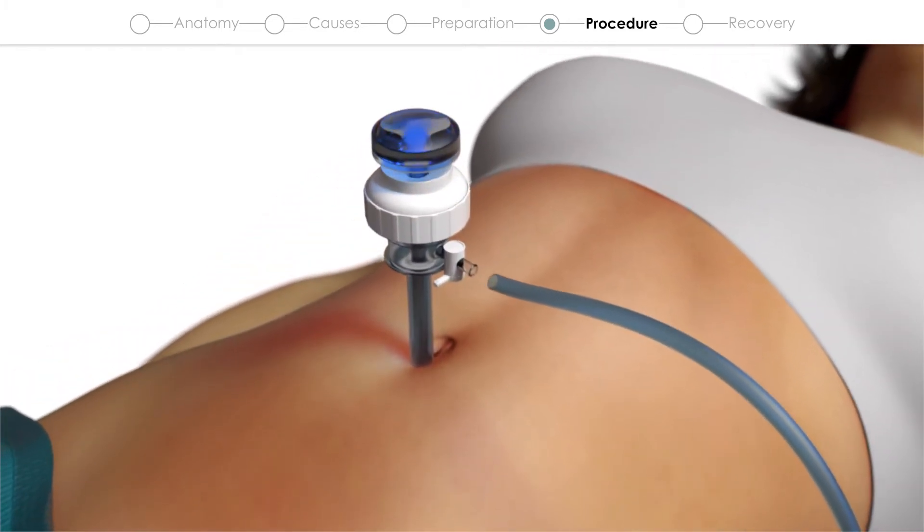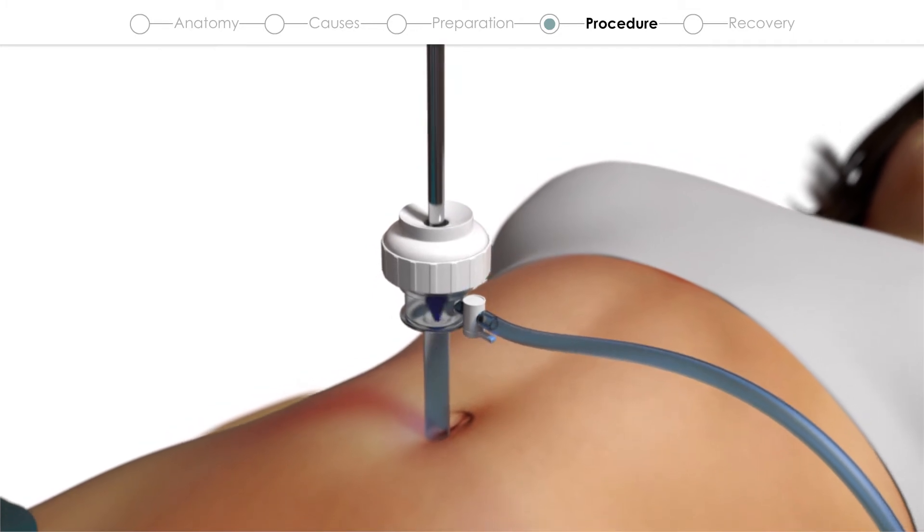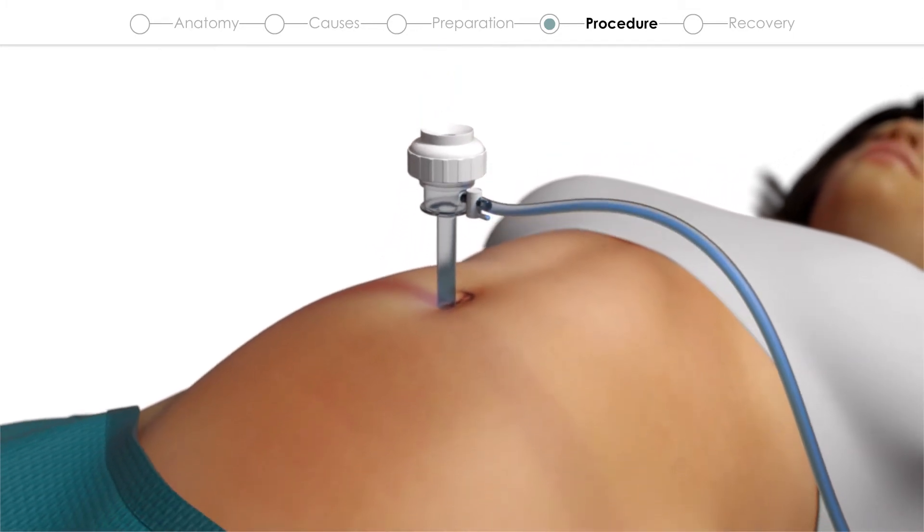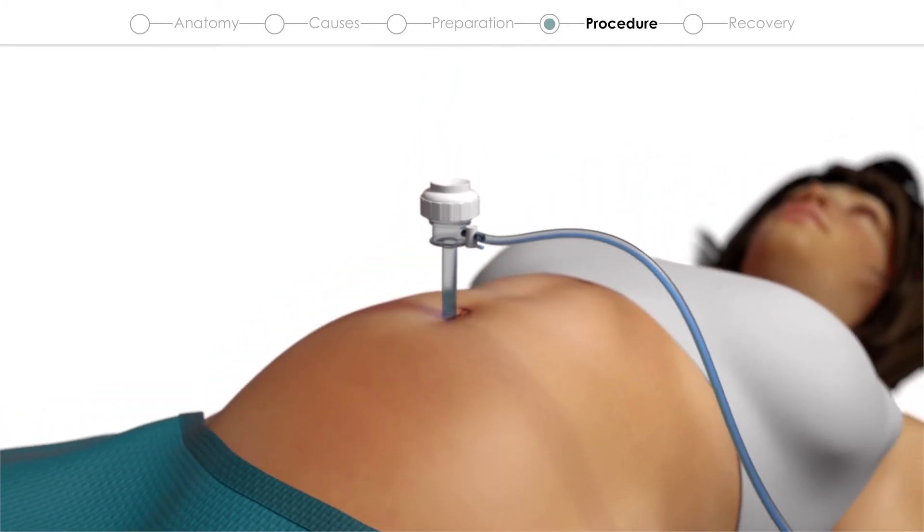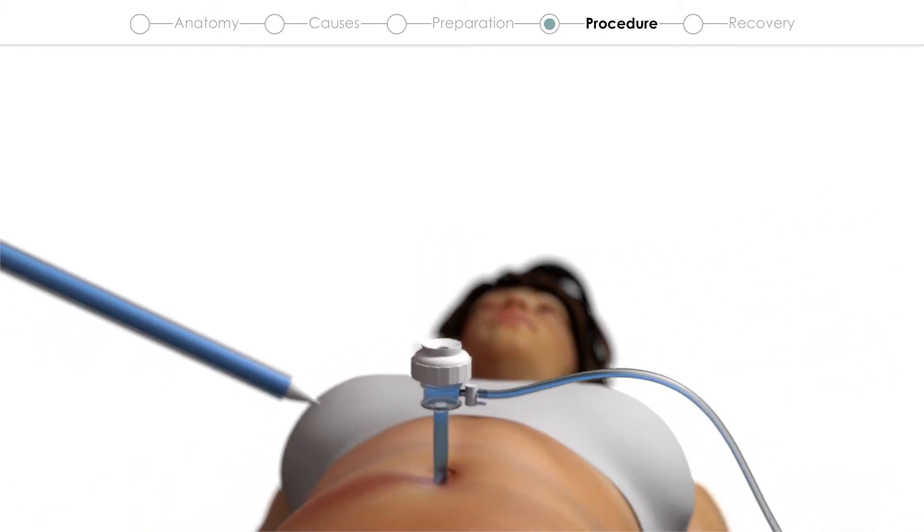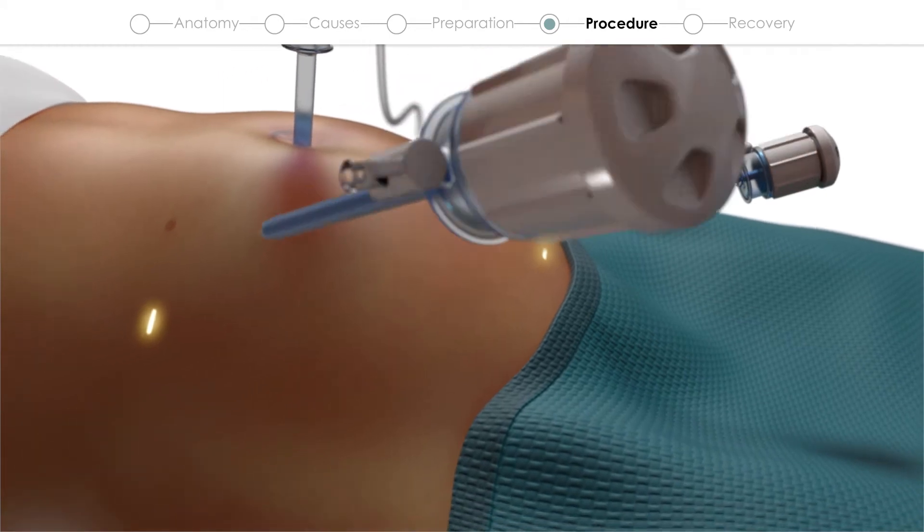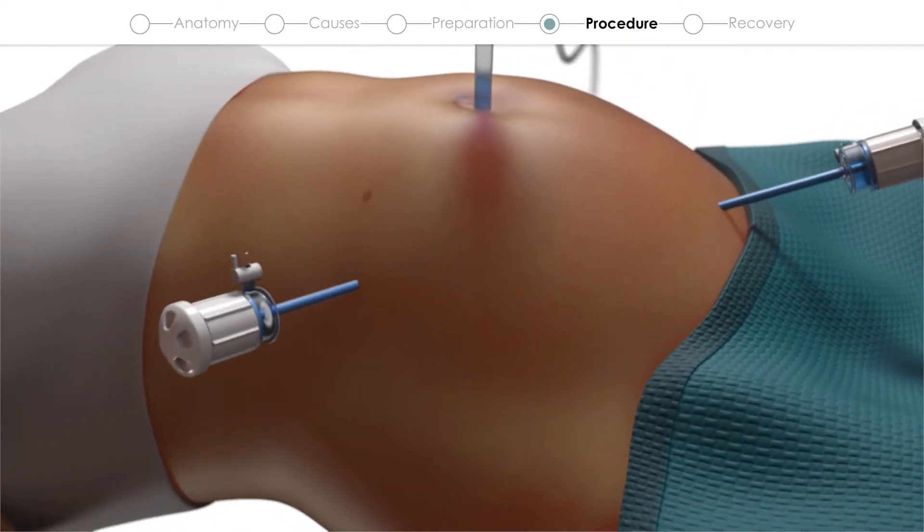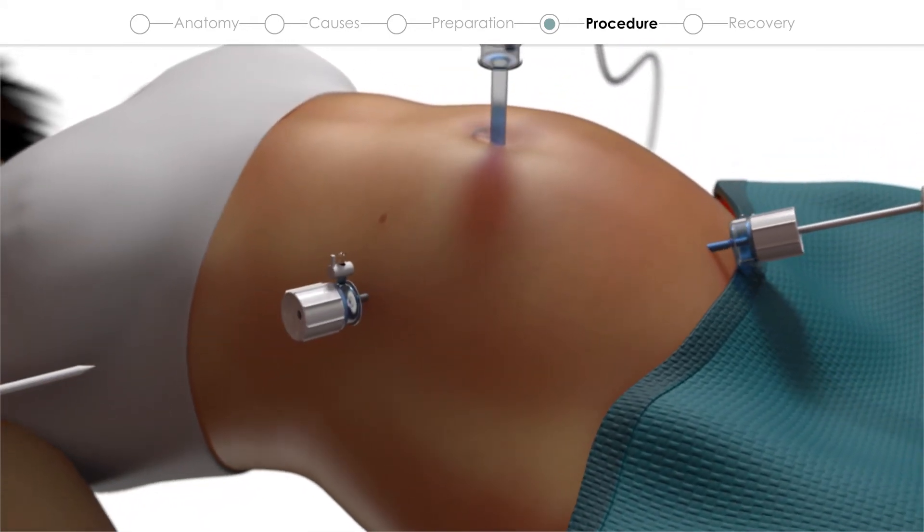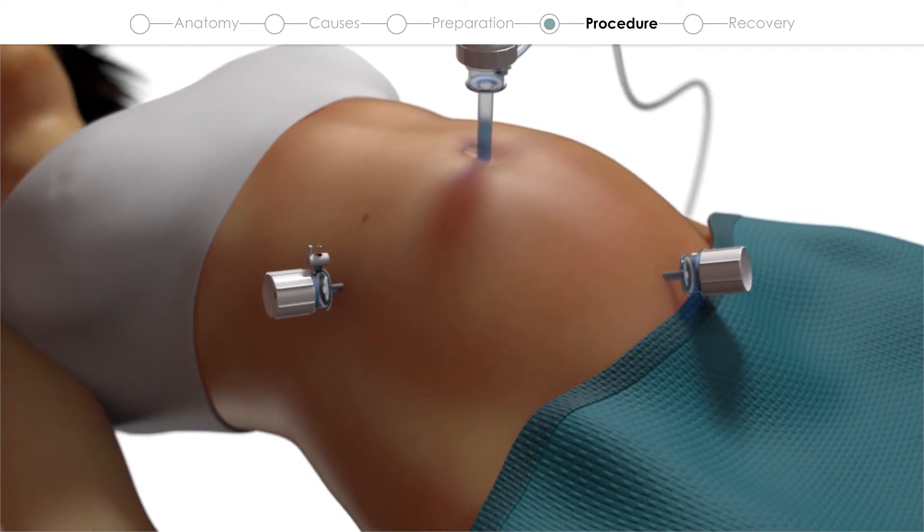The abdomen is filled with gas to create room for the surgeon to work with. Special sealed tubes called trocars allow tools to be used inside the abdomen without releasing the gas. The surgeon then removes the inflamed appendix using instruments through the trocars.